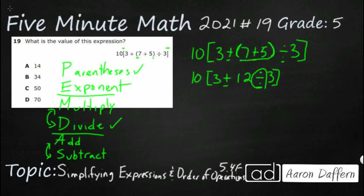So let's do our 12 divided by three first. So we have 10, bracket, three plus — what is 12 divided by three? That's a basic fact, that's four. Now we are getting closer to the end. We're simply going to say three plus four. I'm still within this bracket and I need to simplify that. So I've got three plus four, which makes seven.